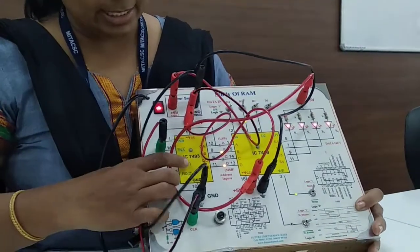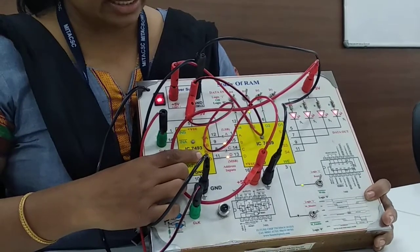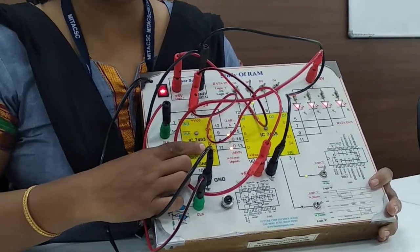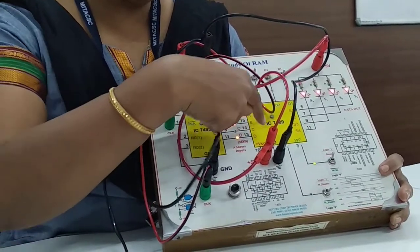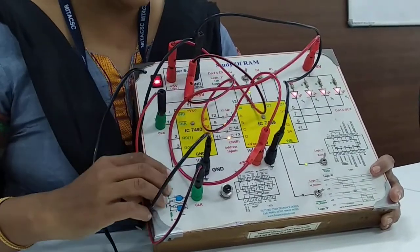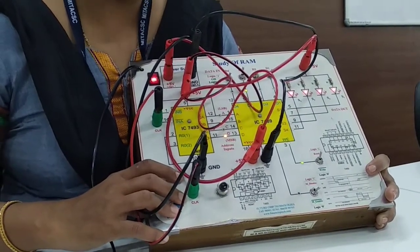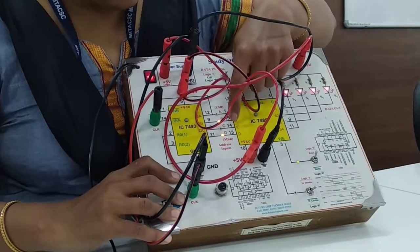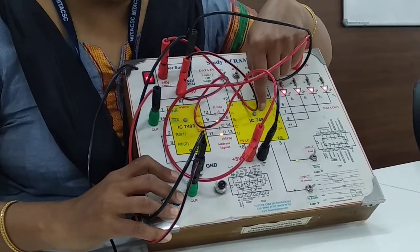The first IC is IC7493. This is the IC which is used for the address generation. Output of this IC is given as an input to the next IC which is your memory IC7489. These ABCD will act as an address line for the memory.